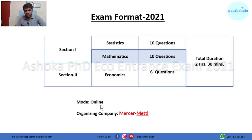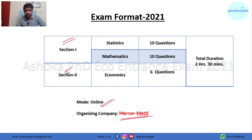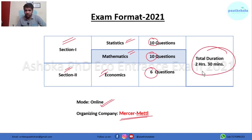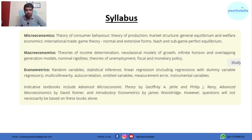This year the mode of exam was online and it was organized by a company called Marshall Met, which is a good company for organizing online entrance exams. The 2021 exam format comprises two sections: Section 1 and Section 2. In Section 1 there were two parts — statistics and mathematics — with 10 questions each. In Section 2 there was economics with six questions. The total duration of the exam was two hours and 30 minutes.